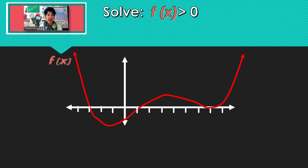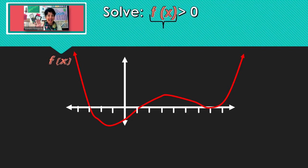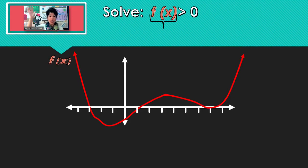So here we have f of x is greater than zero. f of x just represents some function and we want to find the answer graphically. What's the meaning of a function being greater than zero? What is that f of x? If you take an x and substitute it into the function, the answer you get is the y part of the coordinate.